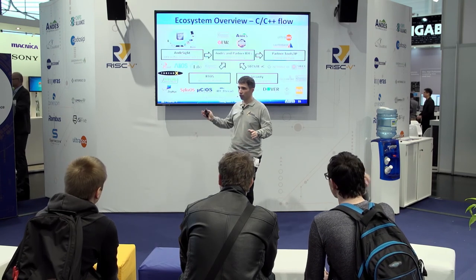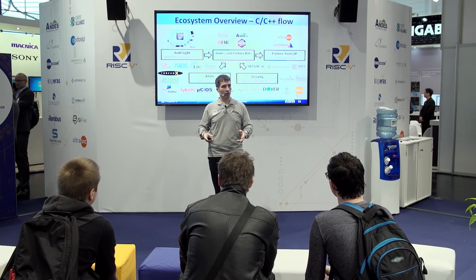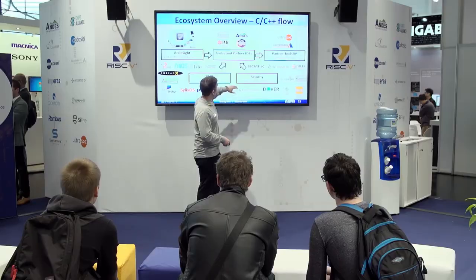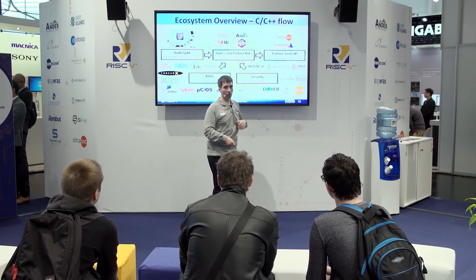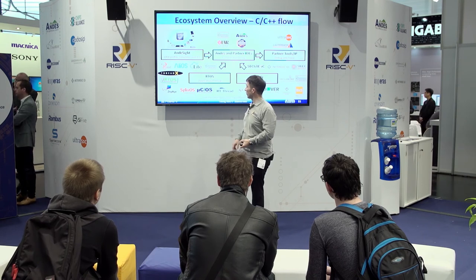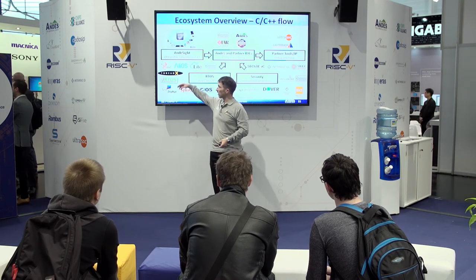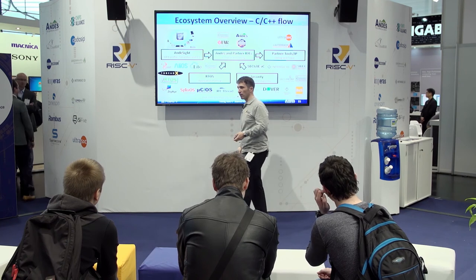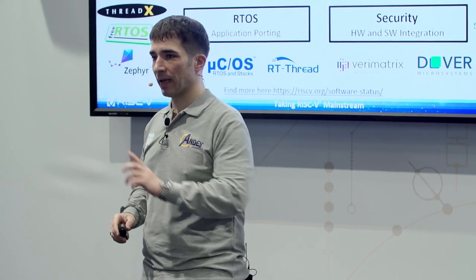To show the ecosystem: Andes provides everything, but the great thing about RISC-V is that the broader ecosystem lets you use other partners as well. For debugging you can use Andes or partners like Segger and IAR. For operating systems you have ThreadX, RT-Thread, and others including LEOS from China. For security, we work with partners like HEX-Five and SecureIC. That is the real power of RISC-V — one company like Andes, but a whole ecosystem of many companies all working together to give you powerful, unique solutions.